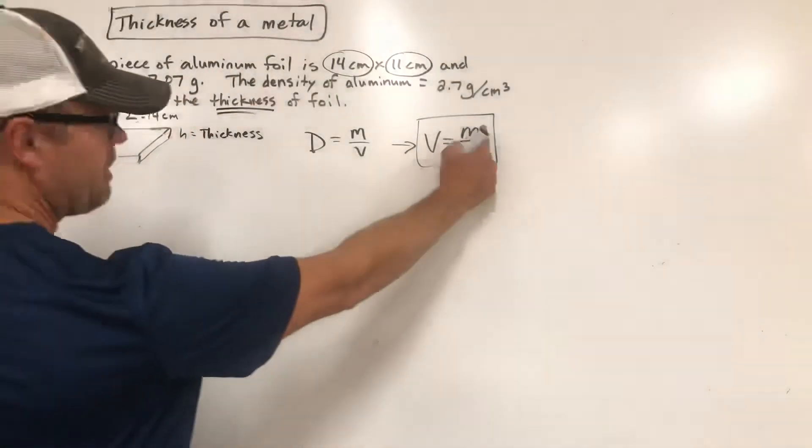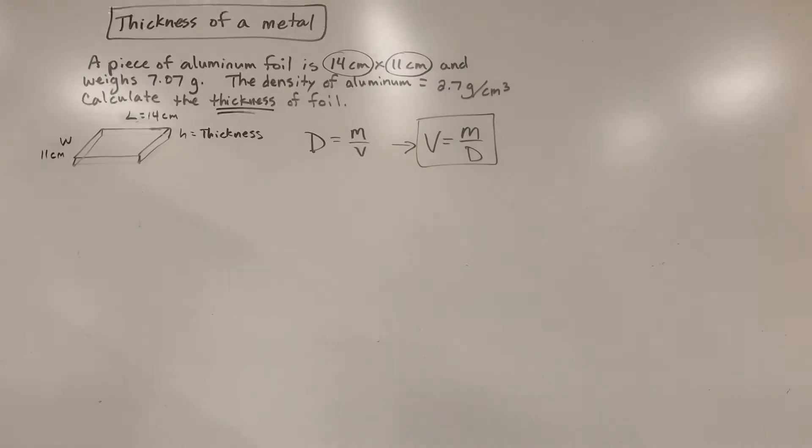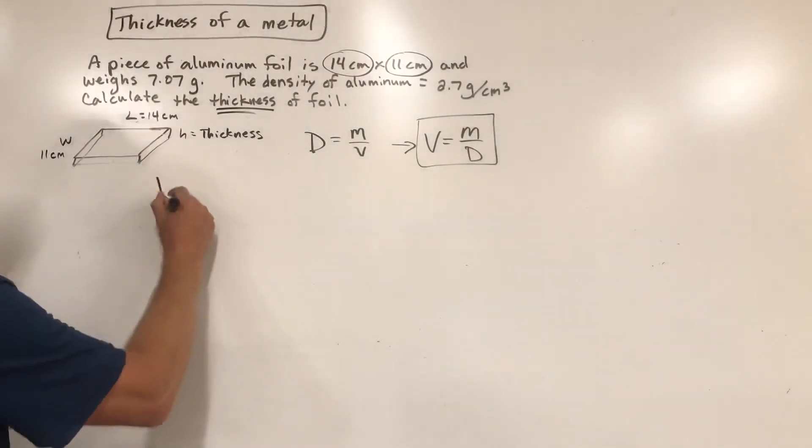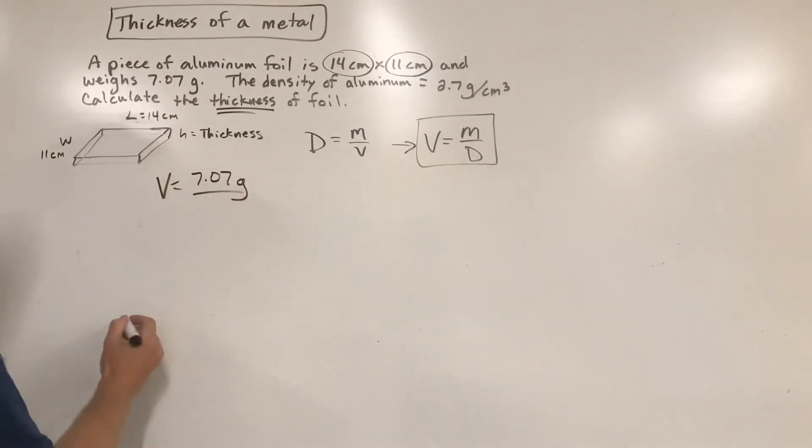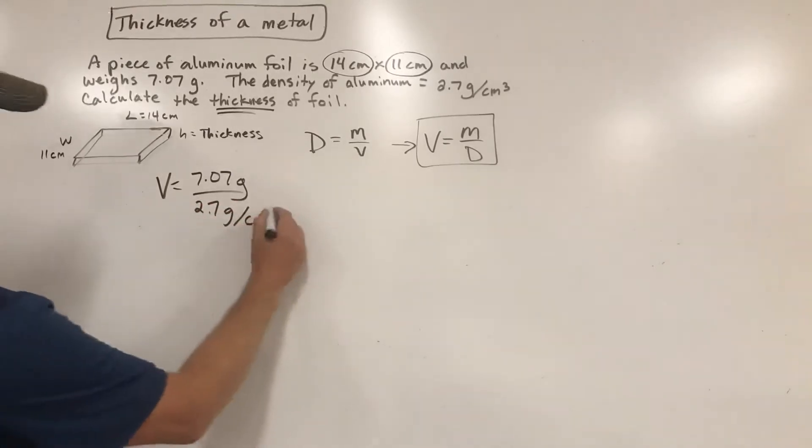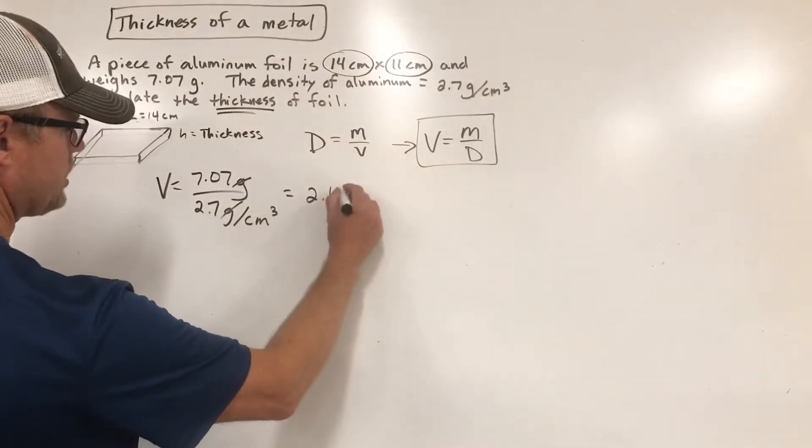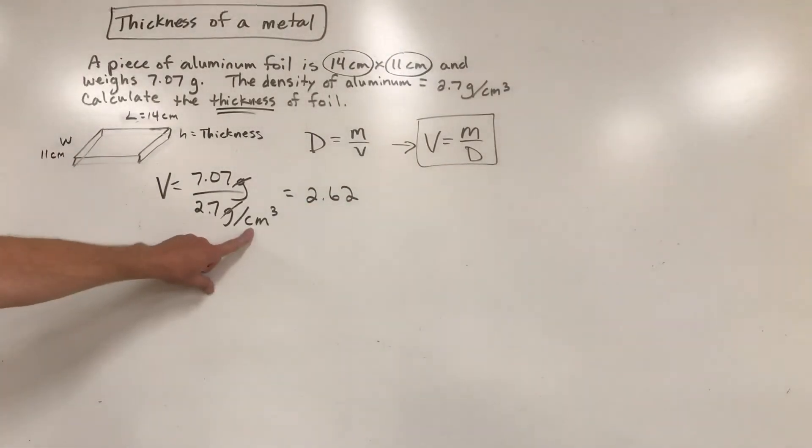Do I have the pieces I need? I got a mass and a density. They happen to be in the same comparable units using grams in both. I'm going to say volume equals mass, which is 7.07 grams, divided by the density of 2.7 grams per cubic centimeter. Grams is going to cancel out and all I'm left with is cubic centimeters. If I divide those, I should be able to figure out the volume of this piece of foil. In this case, that's going to equal 2.62 cubic centimeters.